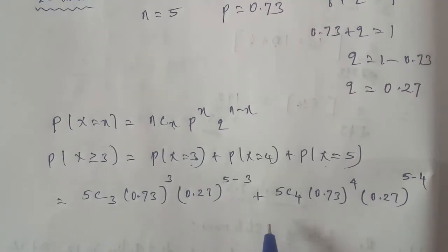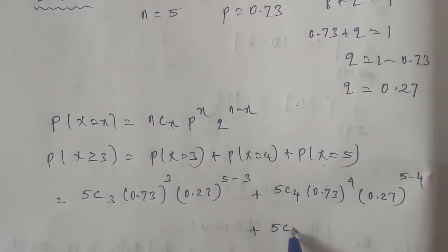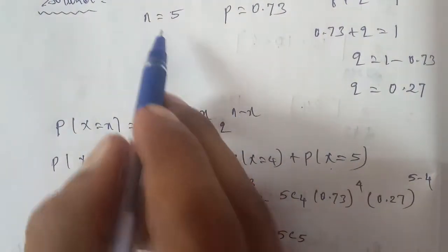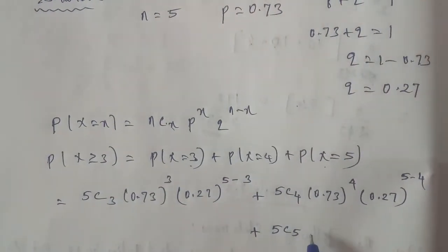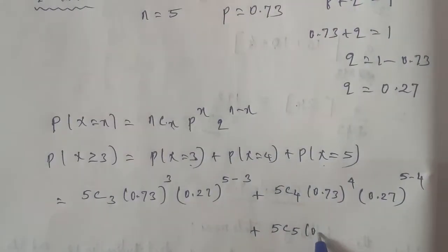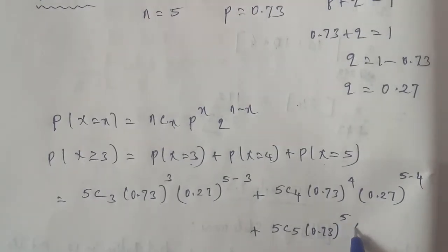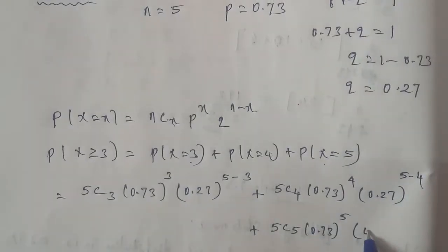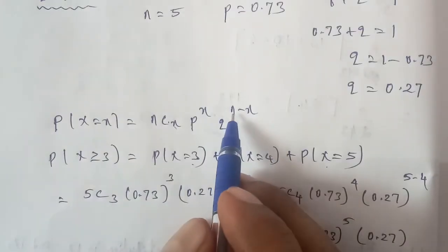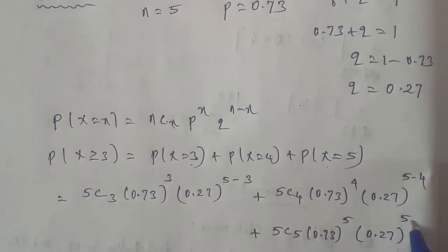For the last term, X equals 5: so plus 5C5, with n equals 5. The formula gives P to the power of x, that is (0.73) to the power of 5, and Q to the power of n minus x, that is (0.27) to the power of 5 minus 5, which equals 0. So the third term is 5C5 × (0.73)⁵ × (0.27)⁰.